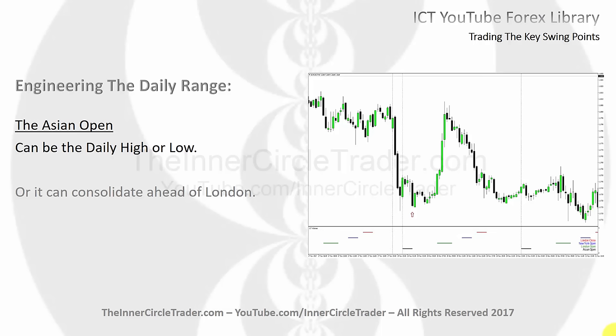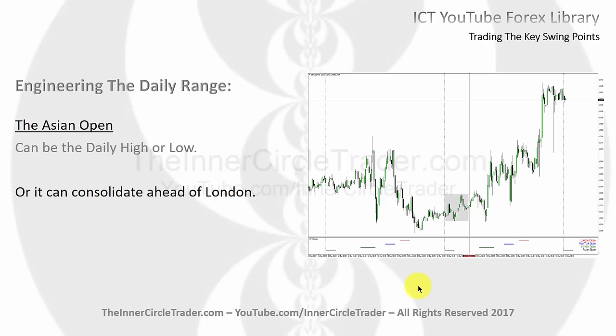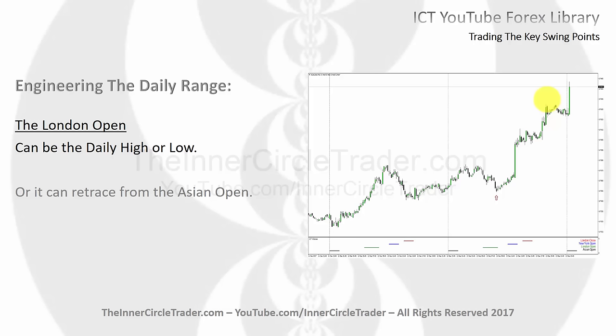Now, engineering the daily range — with Power Three, the general rule of thumb is that Asia is a consolidation, then London creates the high or the low of the daily range, New York is part of the expansion, and then London close creates the high or low of the day, or the opposite end of the range formed in London. But not always is that the case. In some instances, the Asian open will create the daily high or low, as seen in this example, where the low forms during the Asian open and then the high forms in the London session.